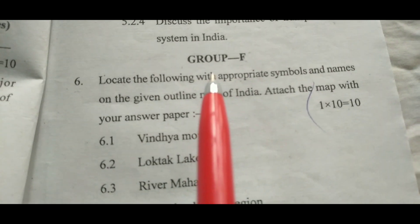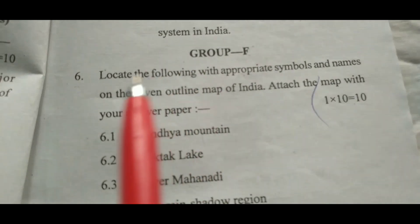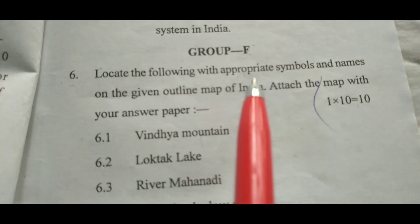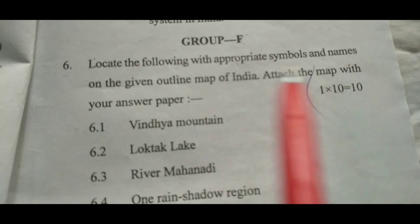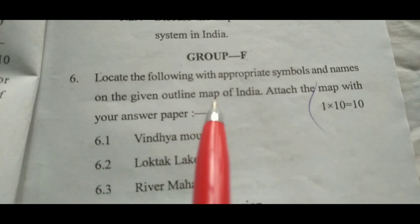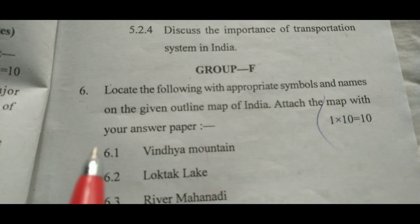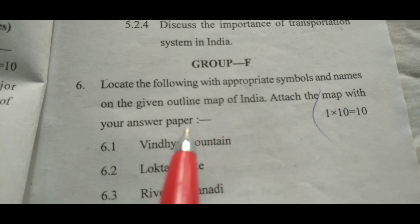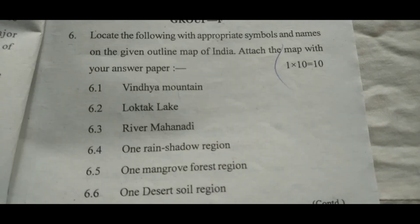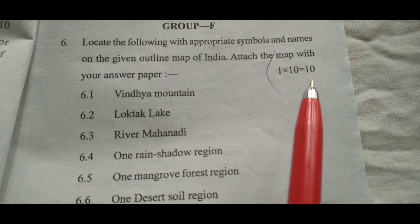In the 2019 Geography question paper, map pointing is Question Number 6, Group F: locate the following with appropriate symbols and names on the given outline map of India and attach the map with your answer paper. It is 1 mark each, 10 marks total.